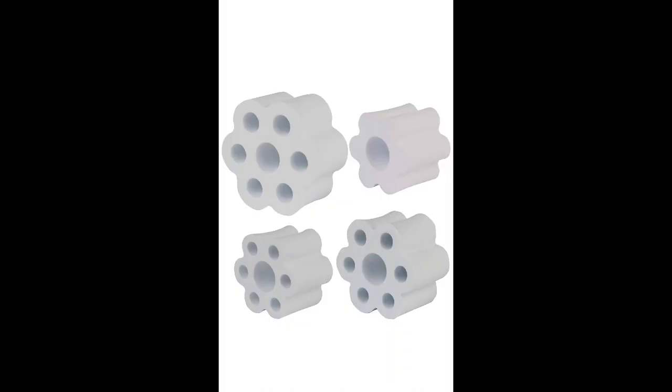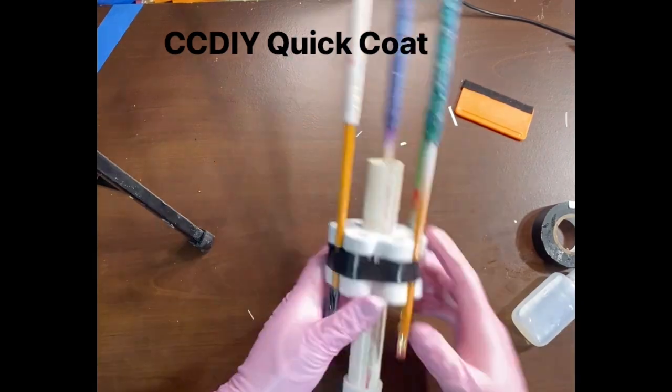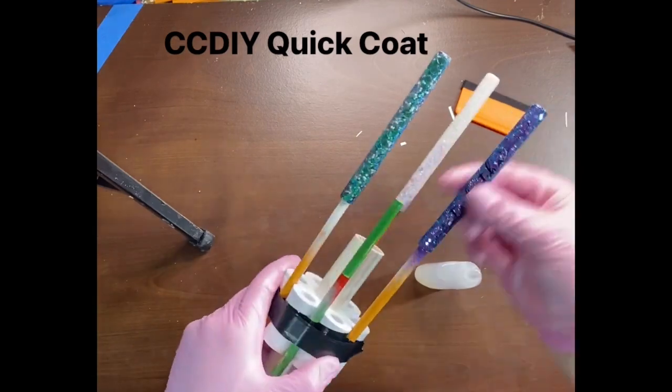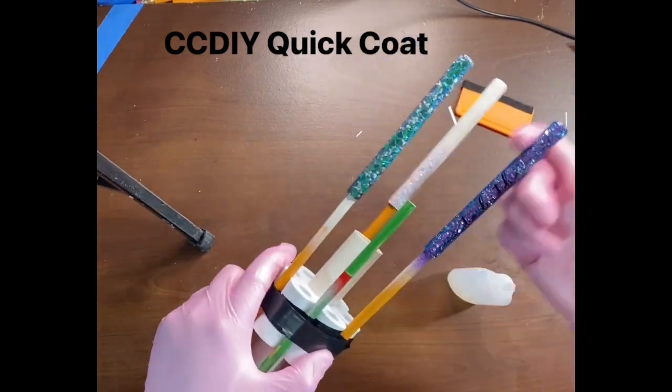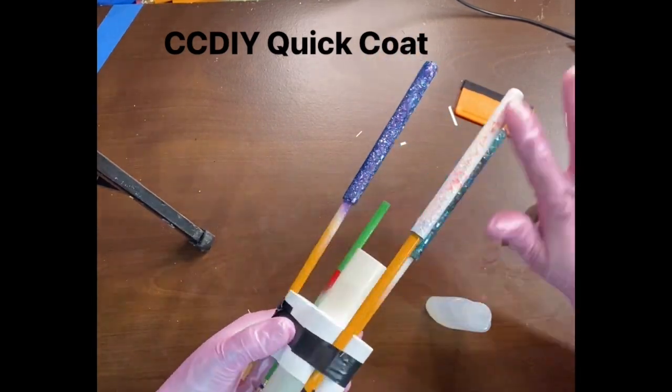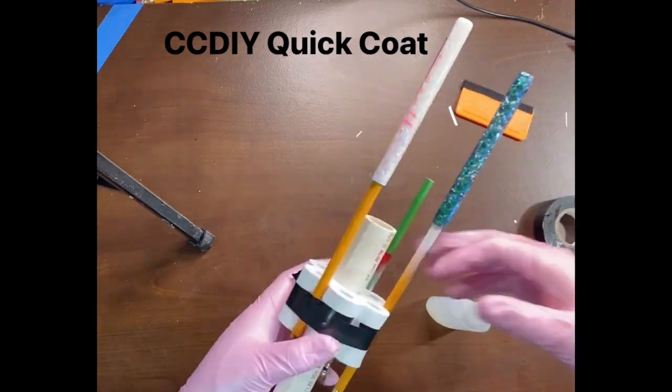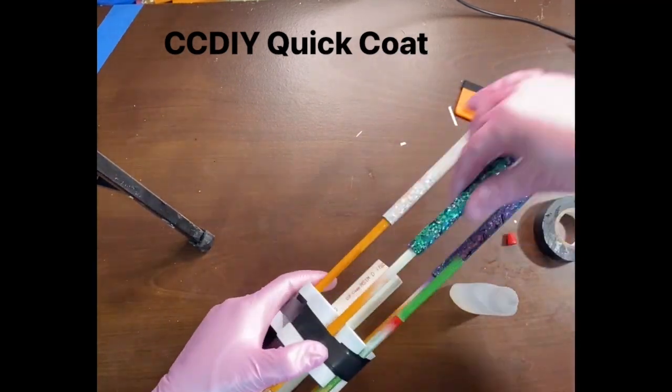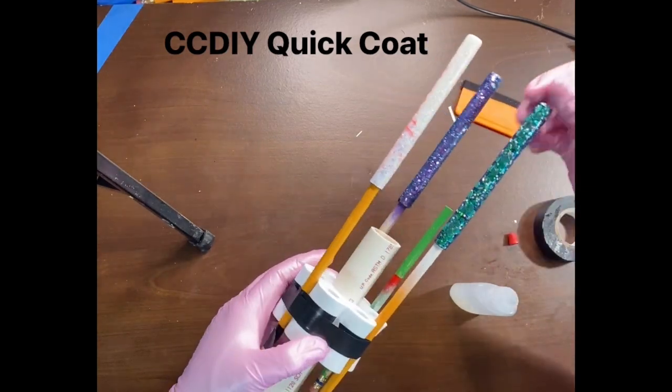Here is what I purchased. It has been a lifesaver. I will link it in the description. Once I have my vinyl on my pens, I then do CC DIY Quick Coat and then let it dry before I epoxy. This is going to help it give a glass-like finish or hopefully only one more coat of epoxy.